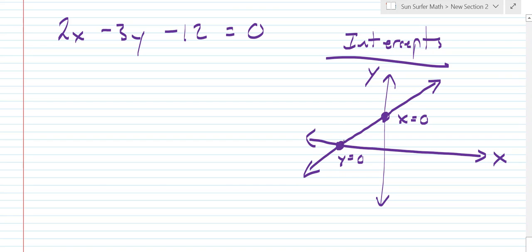So here we're going to have an ordered pair that has some x value, comma, a y value of 0. And here we're going to have an x value of 0 and some y value.